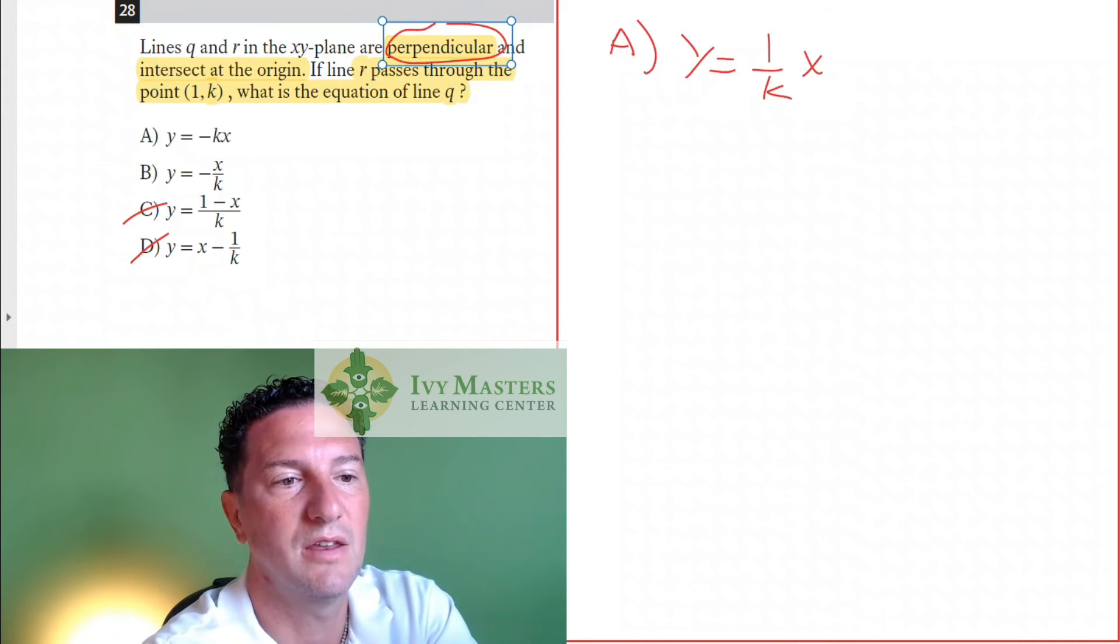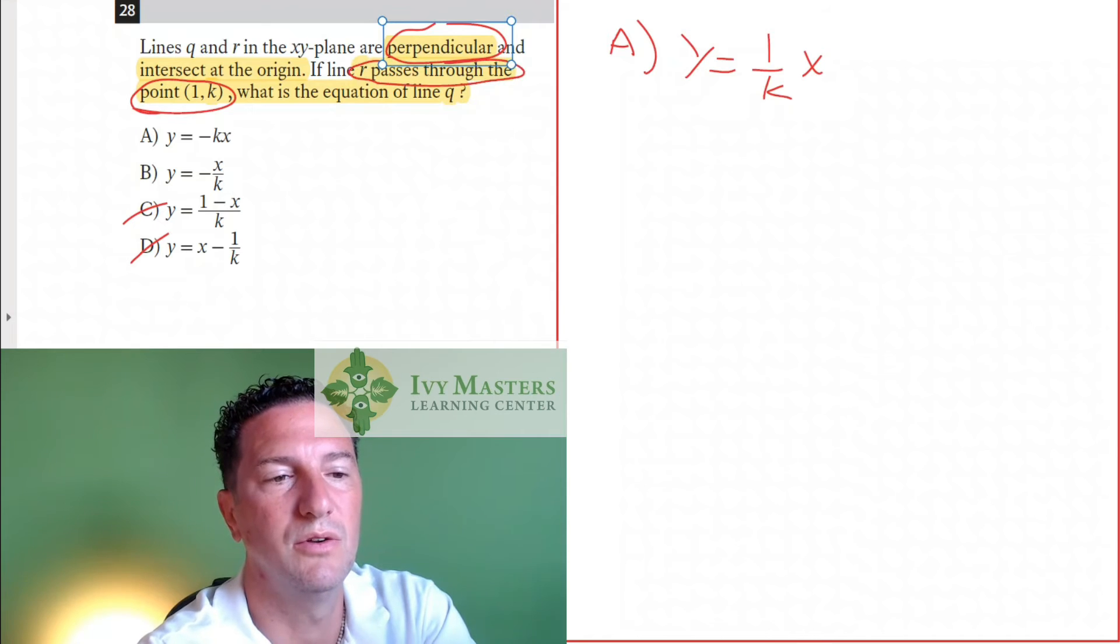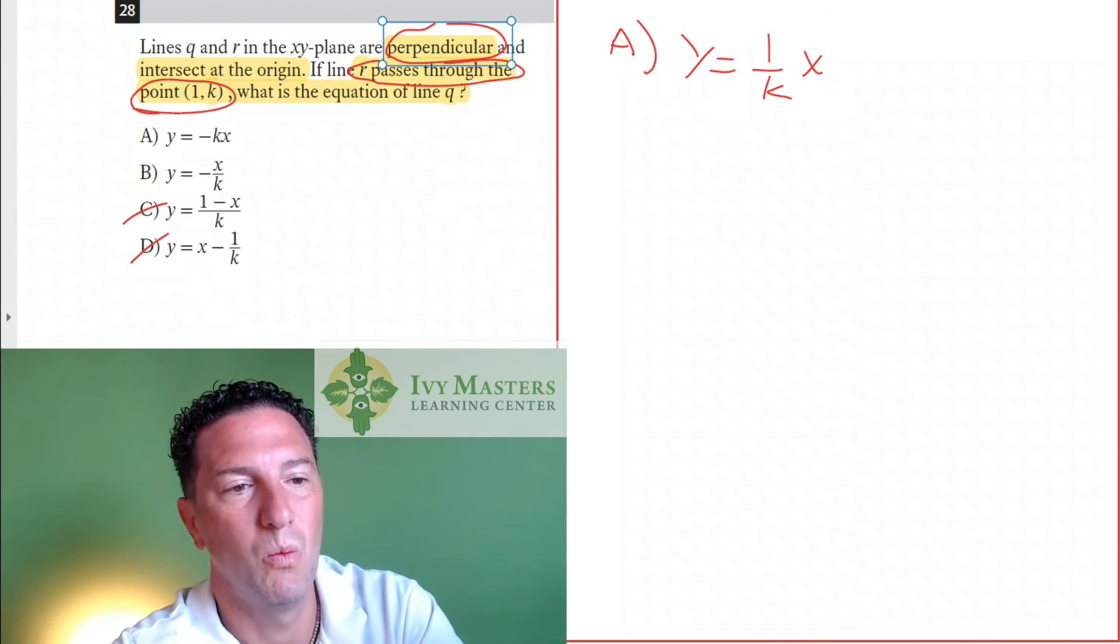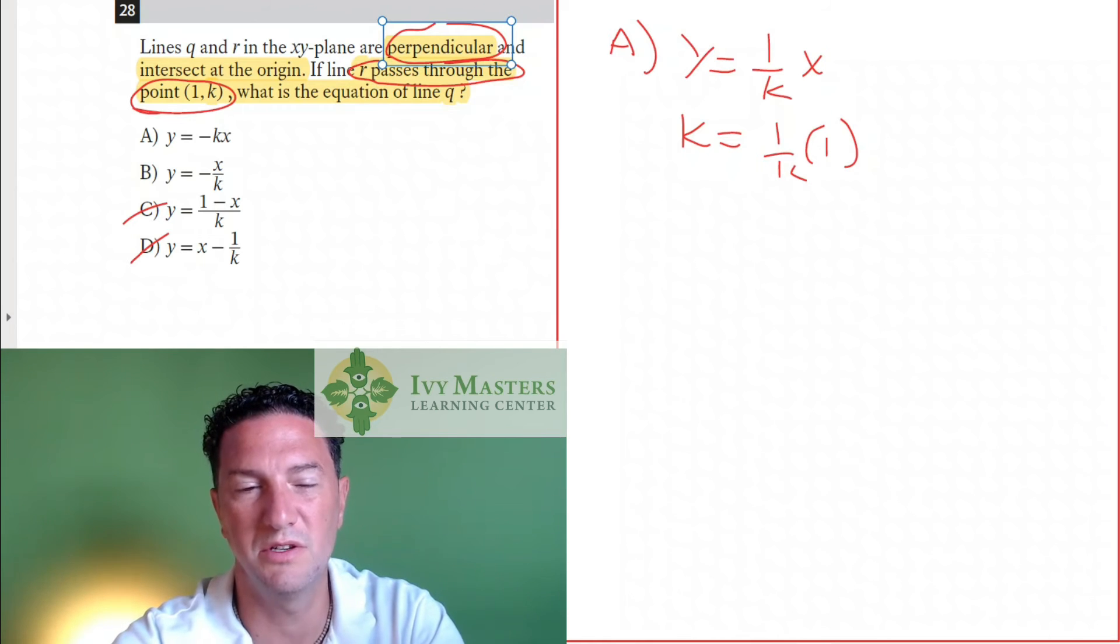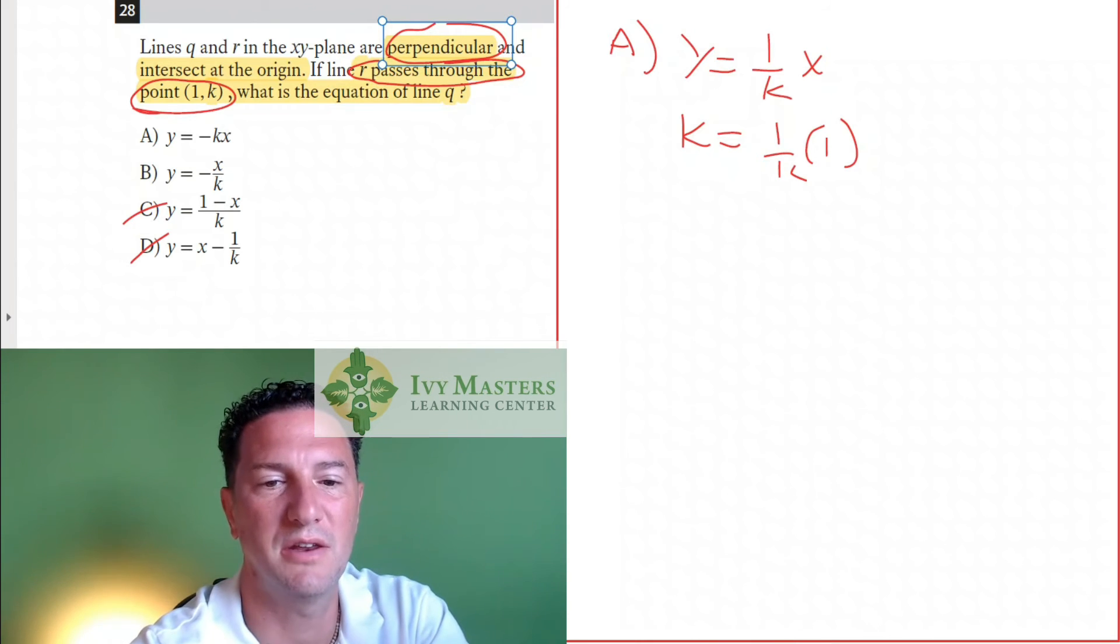And it says that line R passes through the point (1,k). So what I'm going to do now is I'm going to put 1 in for x, and I'm going to put k in for y. So k equals 1 over k times x. And what we see there is k equals 1 over k. So check it out, it's true.